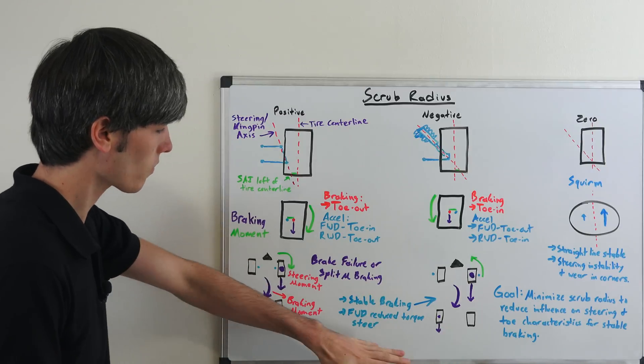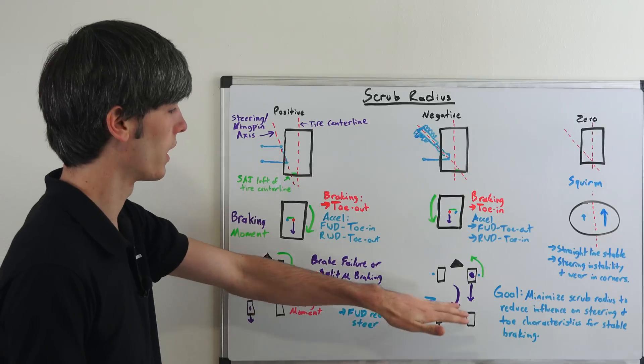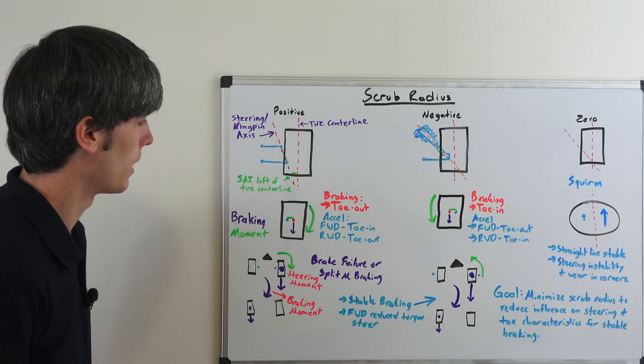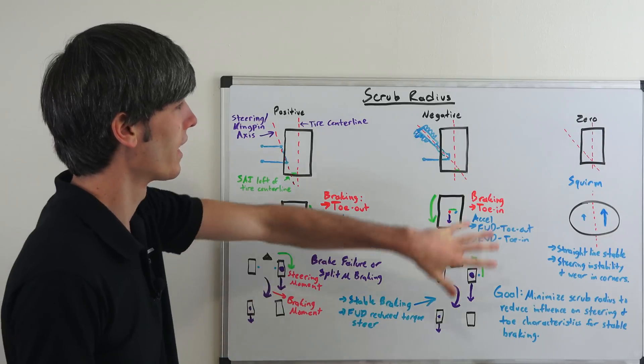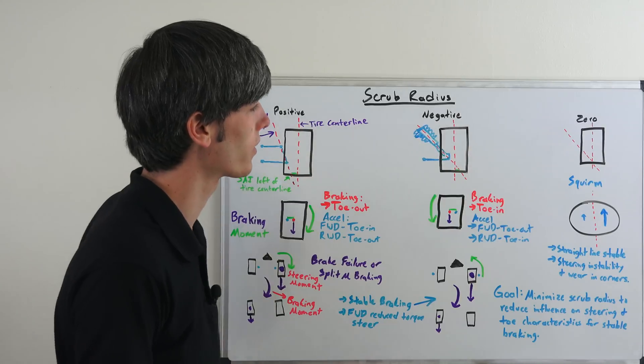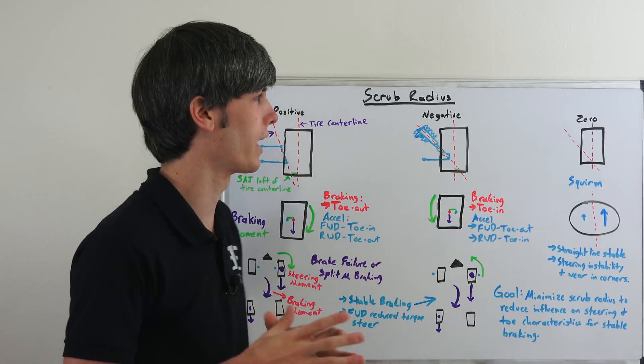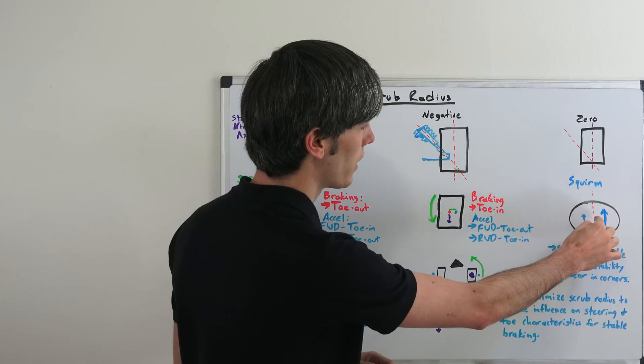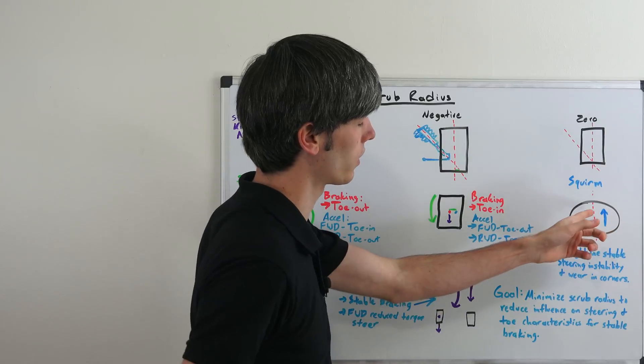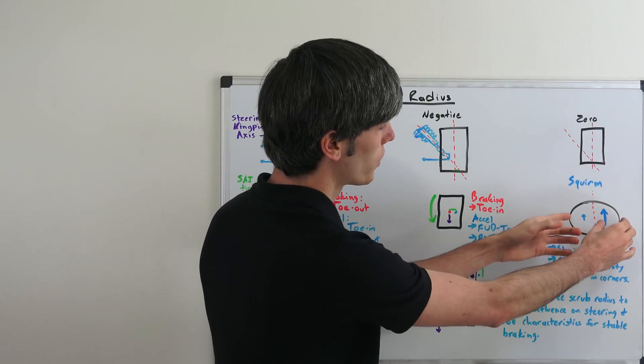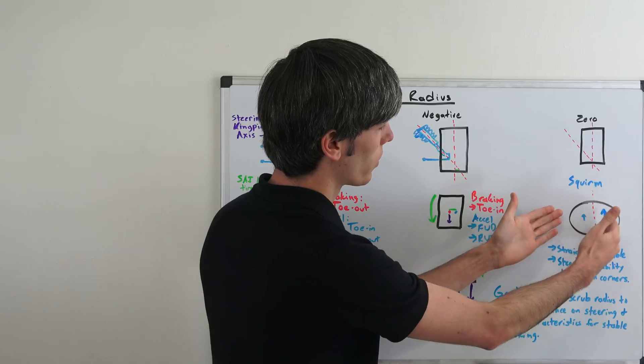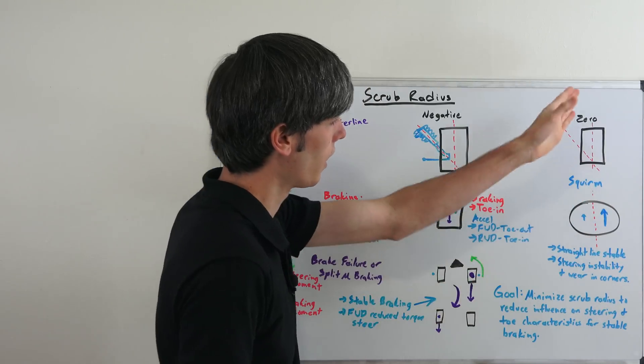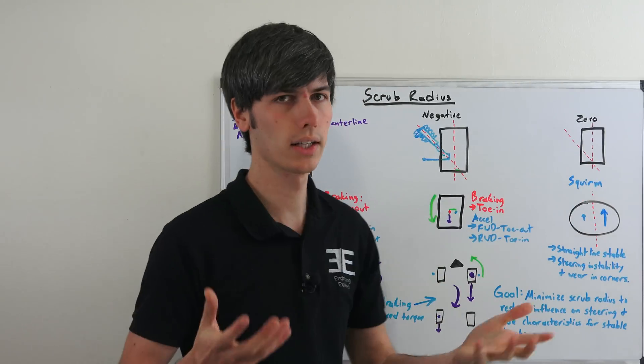Another benefit of it is it can reduce torque steer in front-wheel drive vehicles. And so that's another benefit of doing that. Now if you have zero scrub radius something called squirm can happen and so essentially what's happening here is you've got your pivot point which is in the very center of the tire. Your contact patch has even amounts of contact on either side of where that pivots.